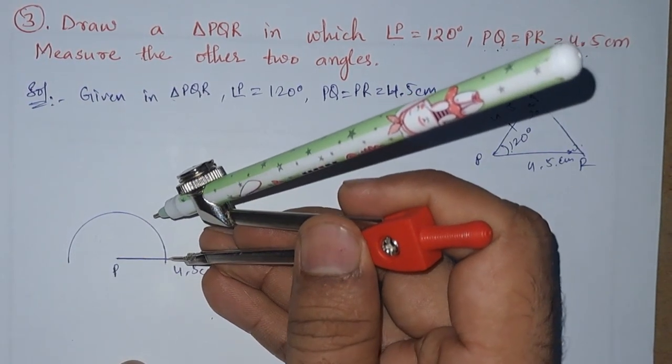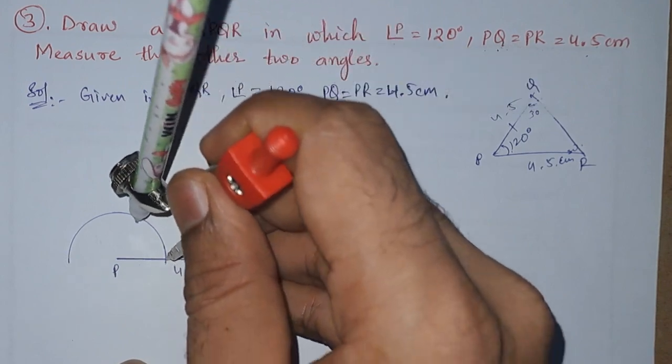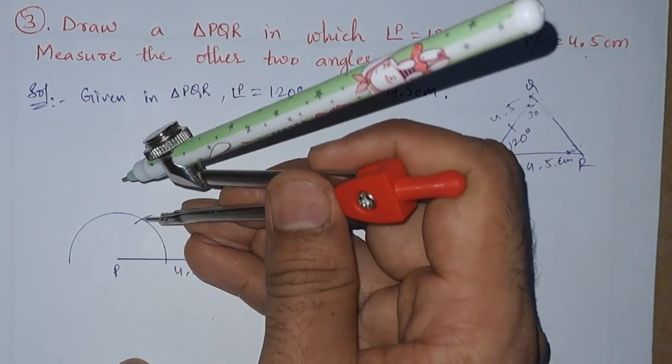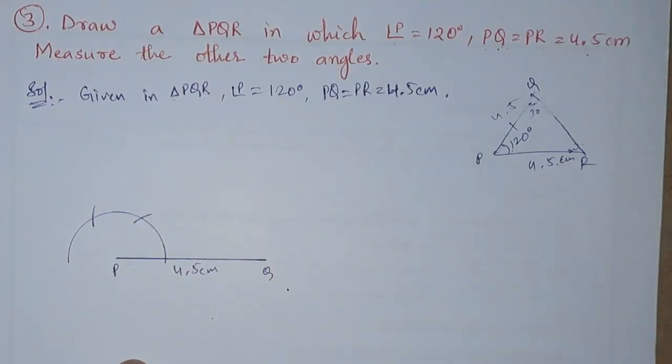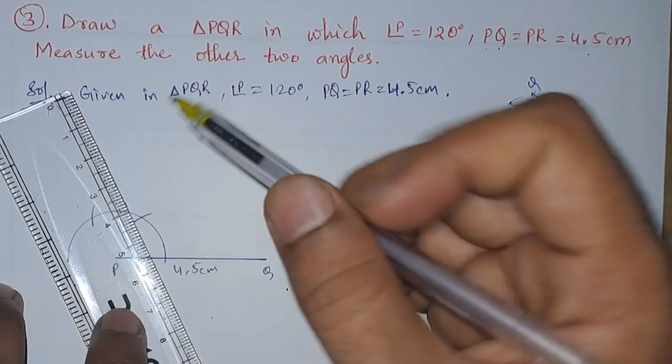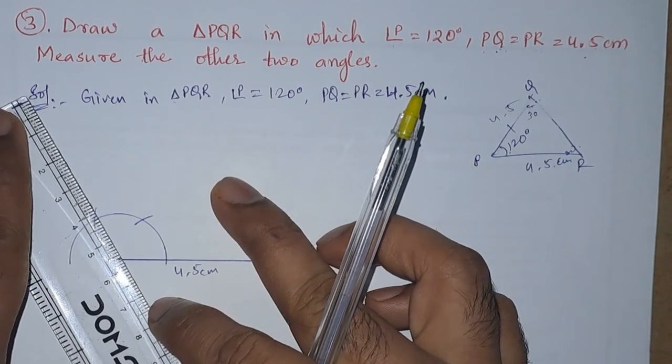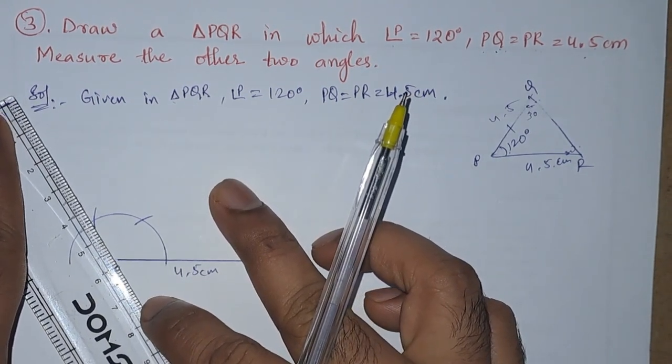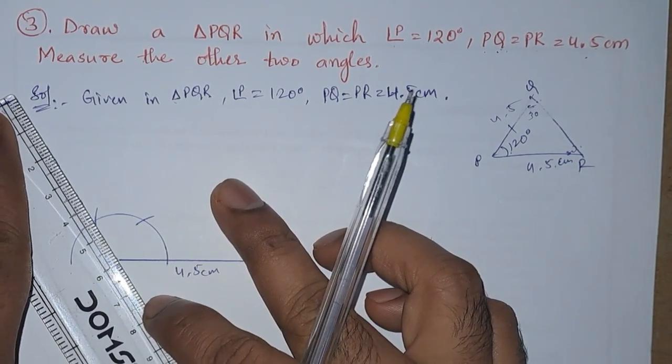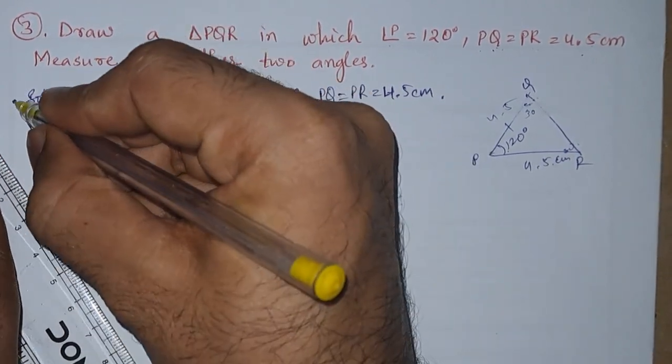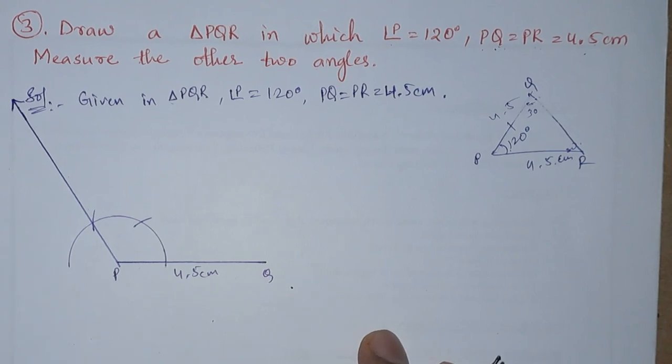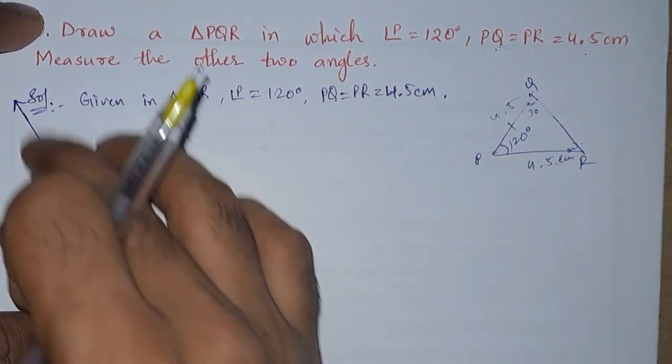Now with the same radius, you need to cut the semicircle. So we cut it, we got 60 degrees. Now it is 120 degrees. Now if we join these two points, we will get a ray. So let us join these two points. So here we got a ray.